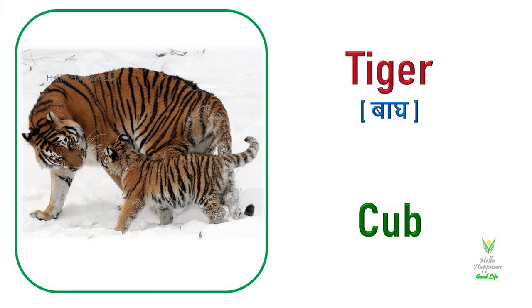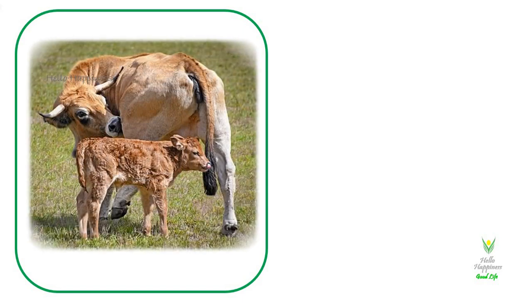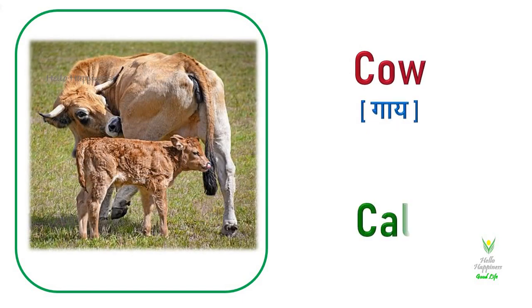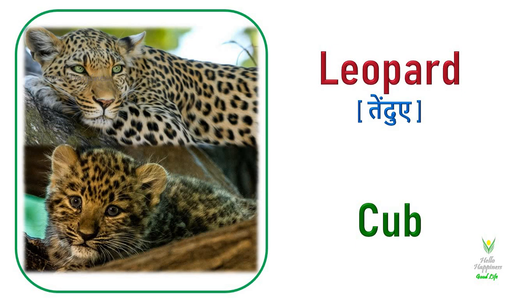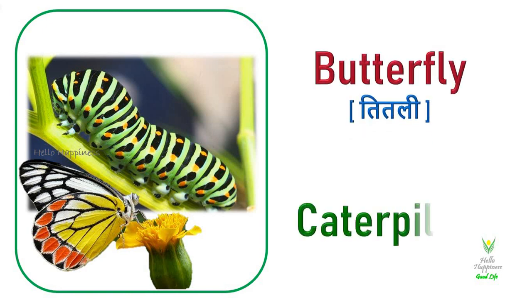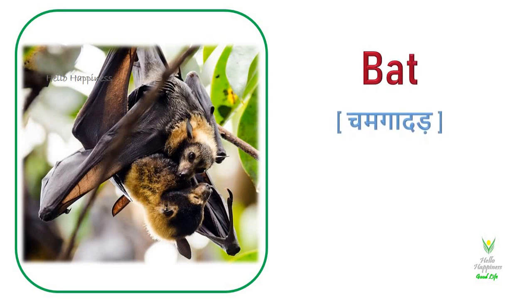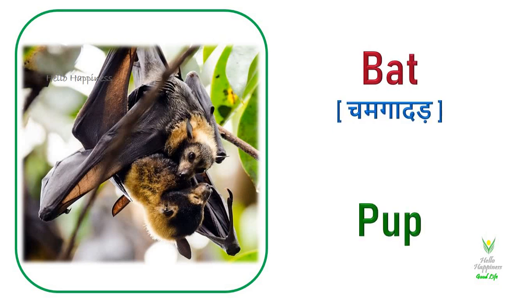Tiger. Tiger's young one is called a Cub. Cow. Cow's young one is called a Calf. Leopard. Leopard's young one is called a Cub. Butterfly. Butterfly's young one is called a Caterpillar. Bat. Bat's young one is called a Pup.